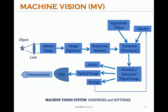There is an object, a lens, and an optical image formed by the lens — typically the optical image will be upside down. This optical image is converted to a digital image by image digitizers. The digitizer stores the information in temporary memory, and from the temporary memory the information is passed to the processor. The processor may utilize certain algorithms or filters for processing, and it will also utilize already stored information from the library.